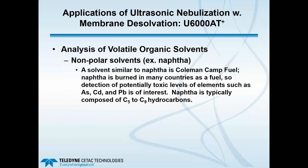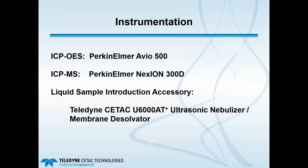The first application is the analysis of a nonpolar solvent — in this case, NAFTA. NAFTA is a solvent similar to Coleman camp fuel, burned as a fuel in many countries. Detection of potentially toxic elements such as arsenic, cadmium, and lead is important. NAFTA is typically composed of C5 to C9 hydrocarbons, so it is quite volatile. We're going to use the U6000 AT+ with a Perkin Elmer Avio 500 simultaneous ICP-OES and a Perkin Elmer NexION 300D quadrupole ICP-MS, which has KED gas addition capability using helium.